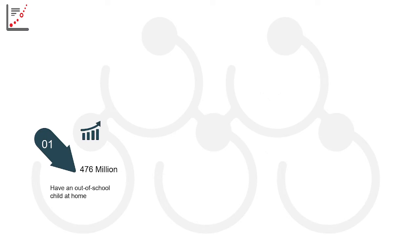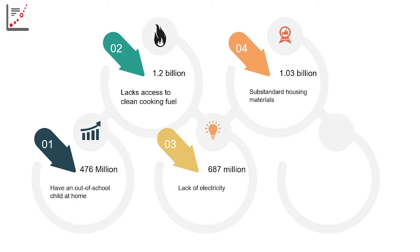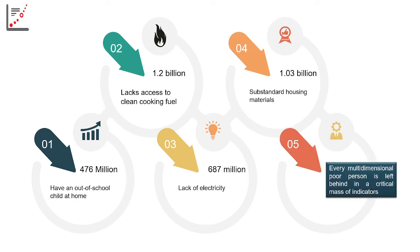Globally, around 476 million children are out of school, 1.2 billion people lack proper cooking fuel — using kerosene, wood, or charcoal instead — and around 687 million lack access to electricity. There are also significant issues with substandard housing conditions worldwide.